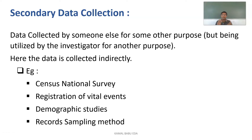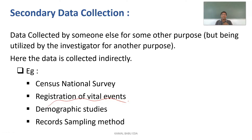Secondary data collection sources include mainly census, national survey, registration of vital events, demographic studies, records, and sampling methods. Census is collected to count how many people are living in a population. For example, to implement a health program, you take data from the census. For family planning programs targeting eligible couples, you can get data through vital registration systems — knowing marital status and fertility rate of the community.